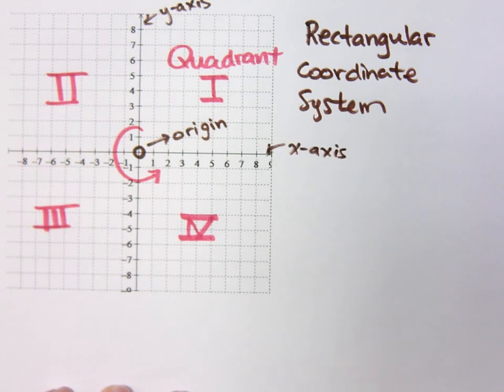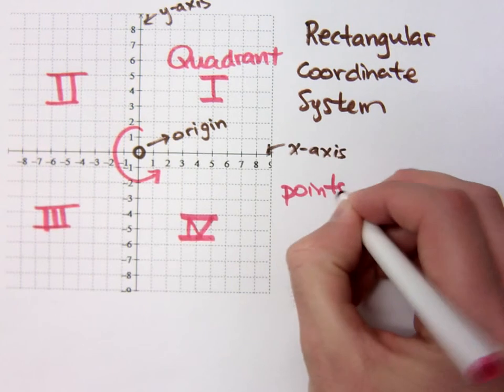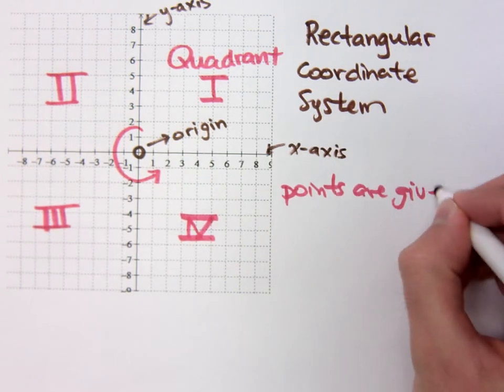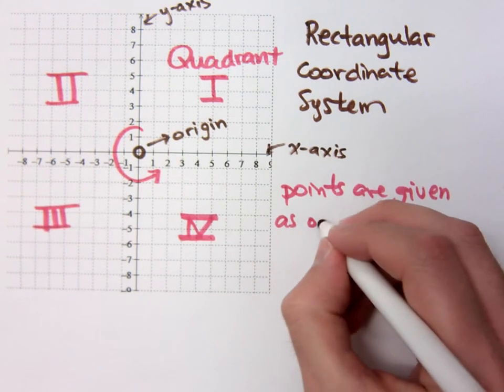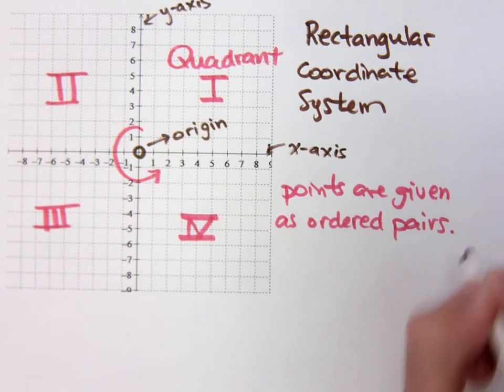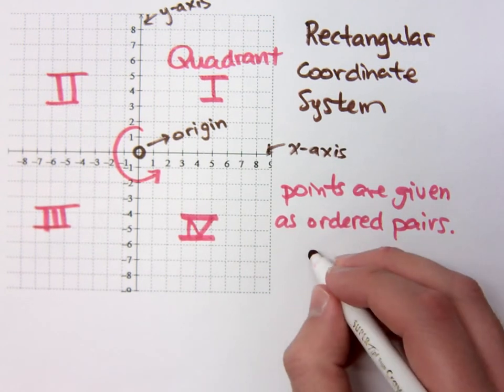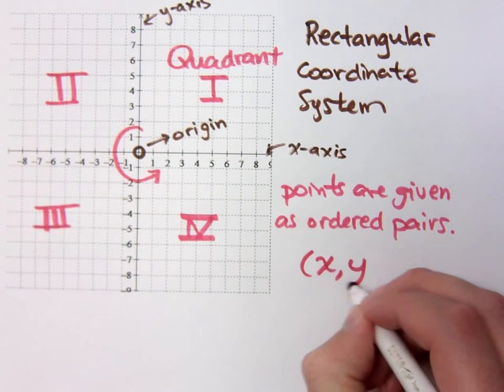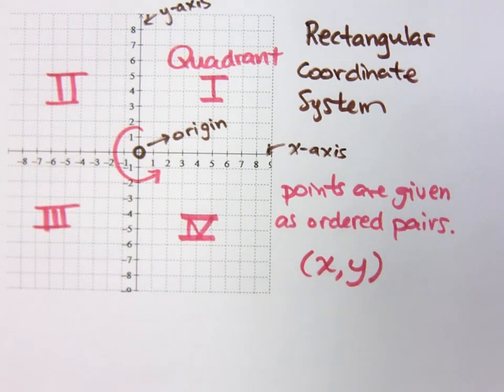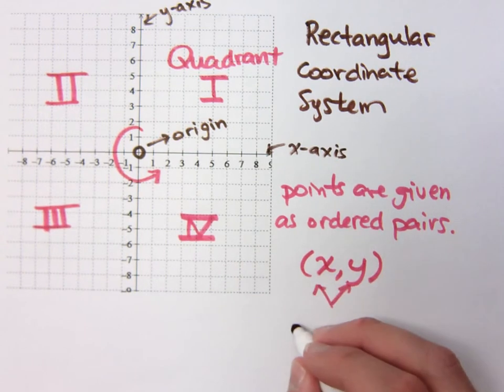Okay. Now, we do need to understand about points, though. And points are always given as ordered pairs. What does ordered pairs mean? An ordered pair is going to look something like this. It's just a pair of numbers. We use parentheses and we use a comma to separate these two pieces. And these two pieces are called coordinates.